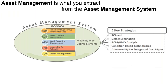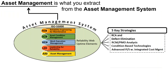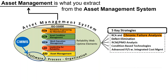Here's a slide explaining three terms that sound very much alike: asset management, the asset management system, and the asset management software. Asset management is the information you extract from the asset management system. The entire system is an oval containing five verticals from Reliability Web Uptime Elements. The software — the CMMS product, whatever you are using — is the little blue circle. So the asset management system is the combination of software, process, and organization.